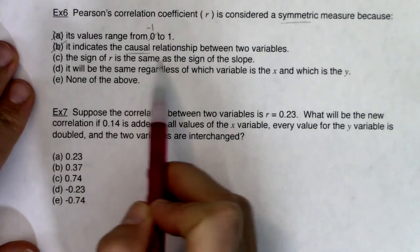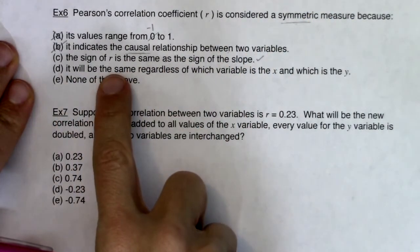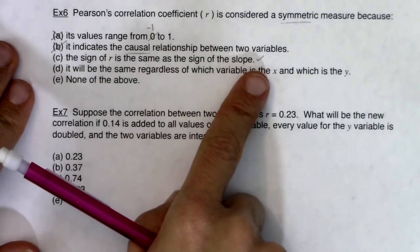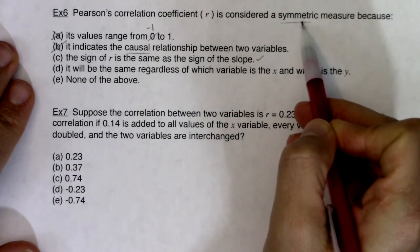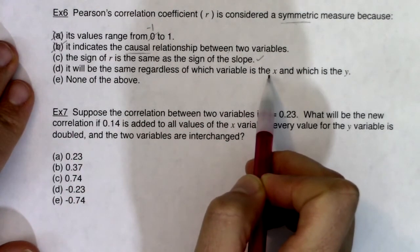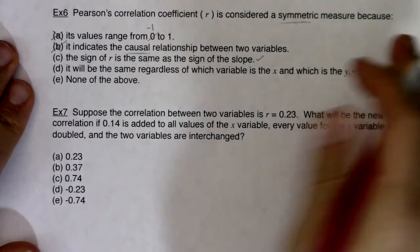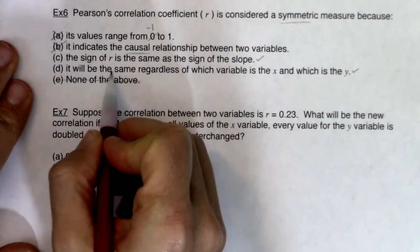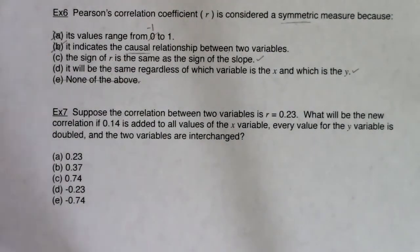The sign of R is the same as the sign of the slope — that is a true statement. Your r value is positive if the slope of your line is positive, and negative if the slope is negative. Also: R will be the same regardless of which variable is x and which is y. That's also a true statement, though it might not feel true just yet. We want to unpack which of these is the reason R is symmetric.